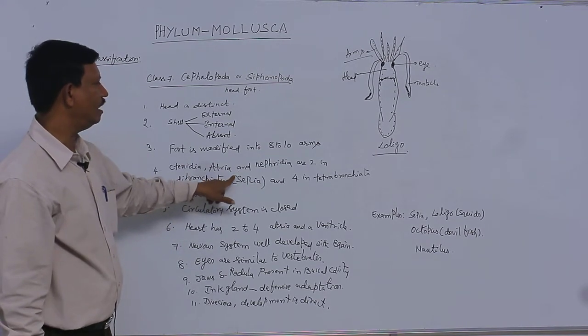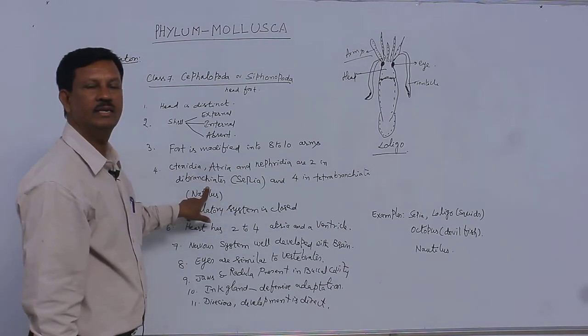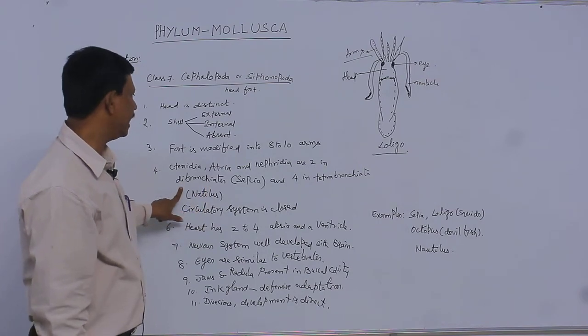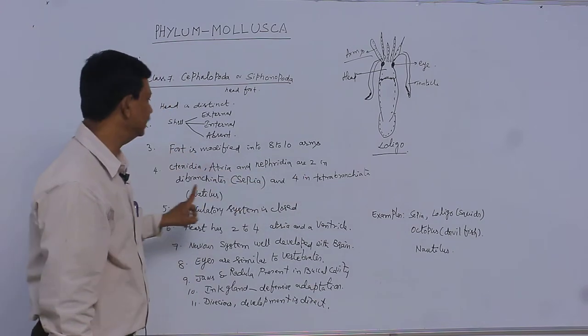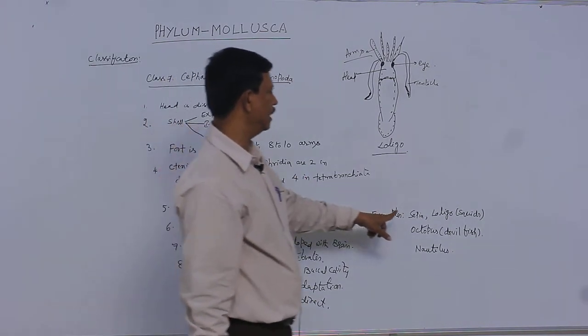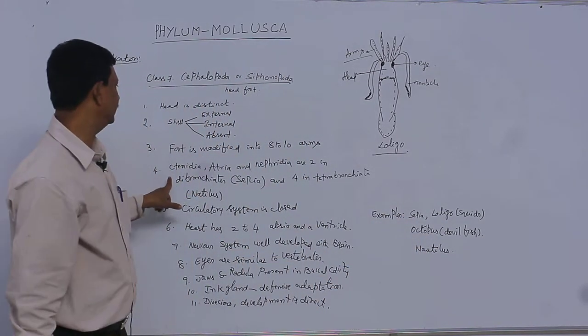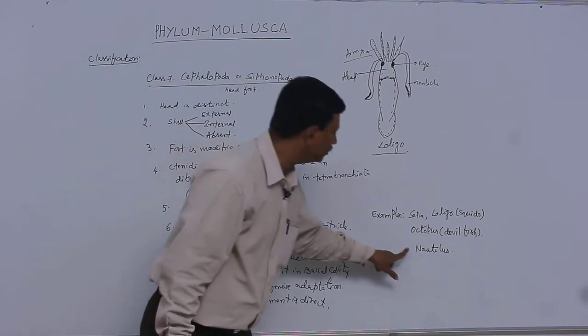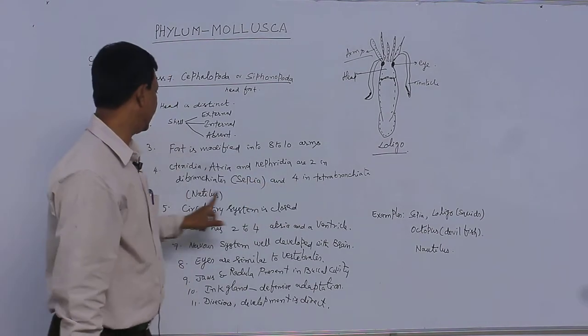Ctenidia and ctenidia are two in dibranchiates. There are two categories present: one is dibranchiates and tetrabranchiates. If two are present, they are known as dibranchiates. Examples like Sepia, Loligo, and Octopus are considered dibranchiates—two are present. But for example, in Nautilus, it is four. Four are present, hence they are known as tetrabranchiates.